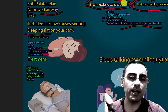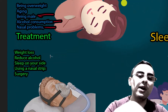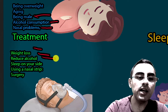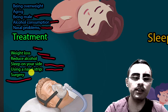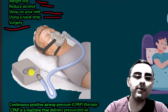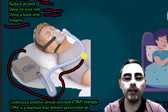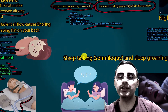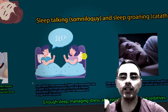Treatment for both snoring and obstructive sleep apnea includes weight loss, reducing alcohol consumption, reducing tobacco smoking, sleeping on your side, and using nasal strips. Surgery may be needed in some cases. Mechanical continuous positive airway pressure (CPAP) is a device used to maintain continuous positive pressure, and in many cases it is effective for both snoring and obstructive sleep apnea.